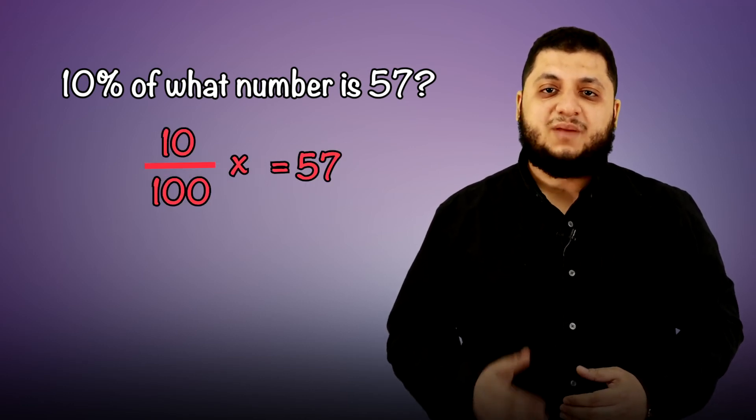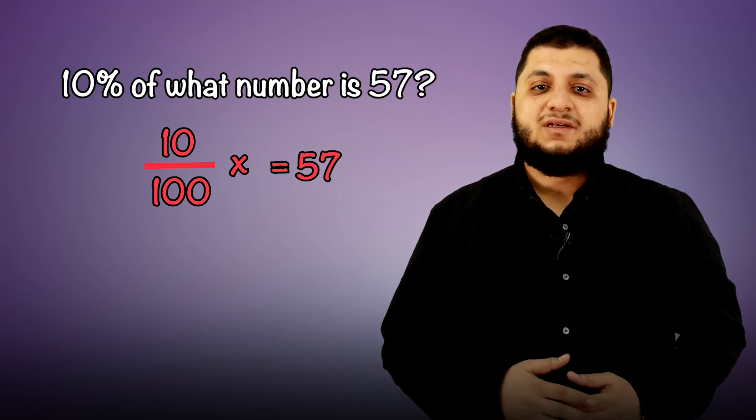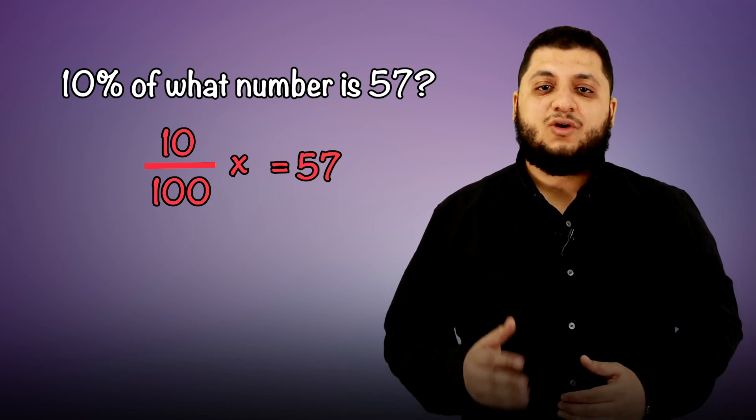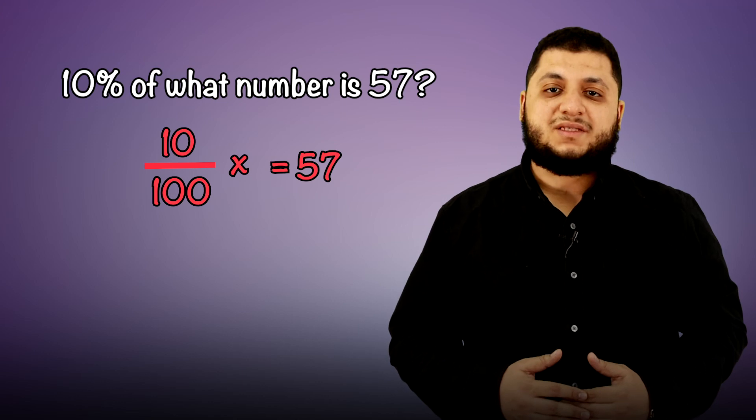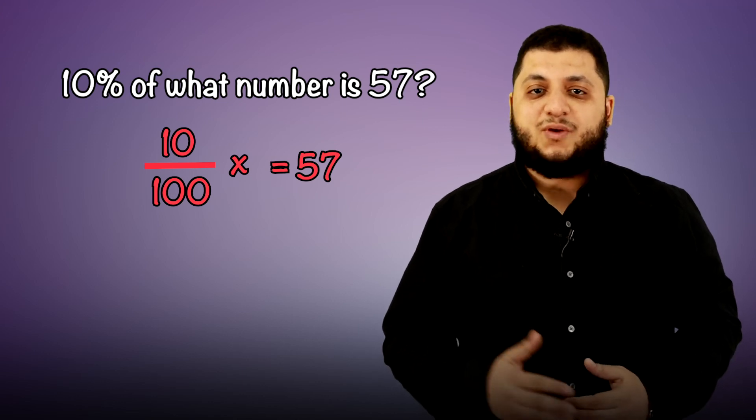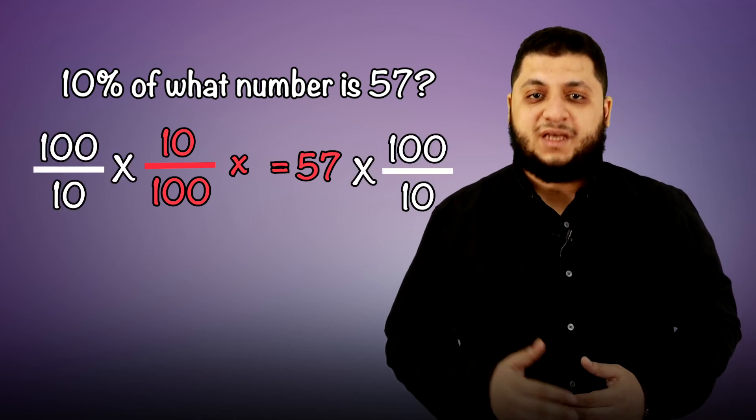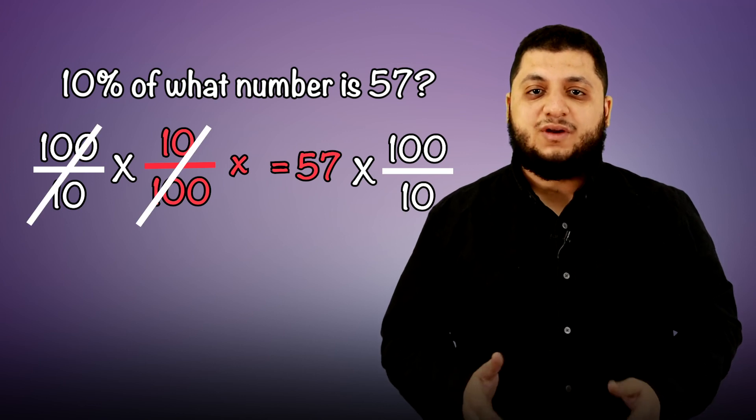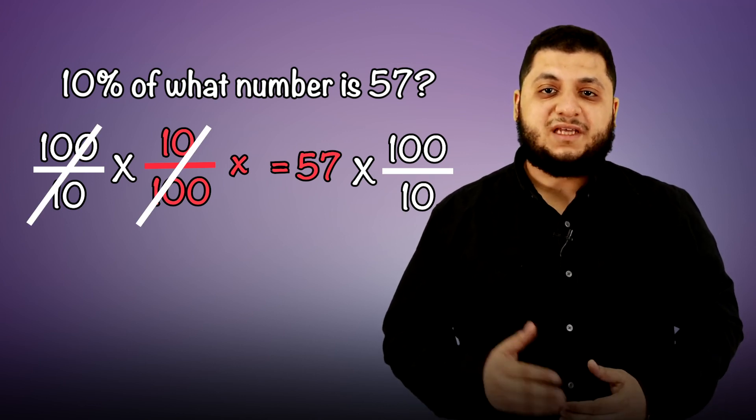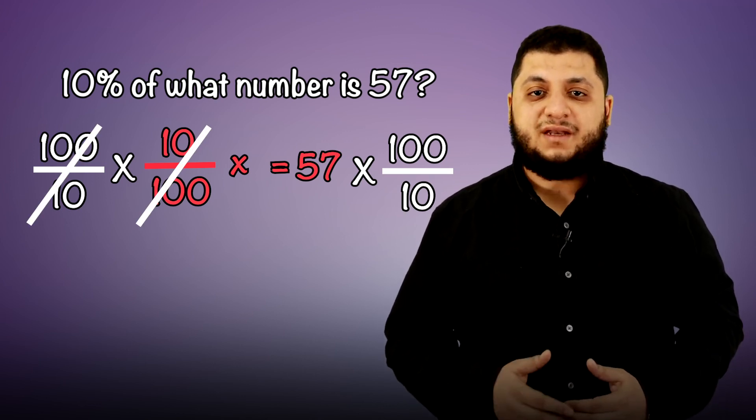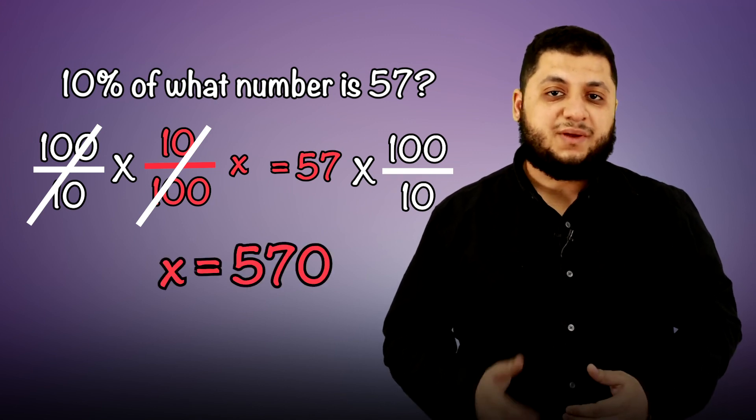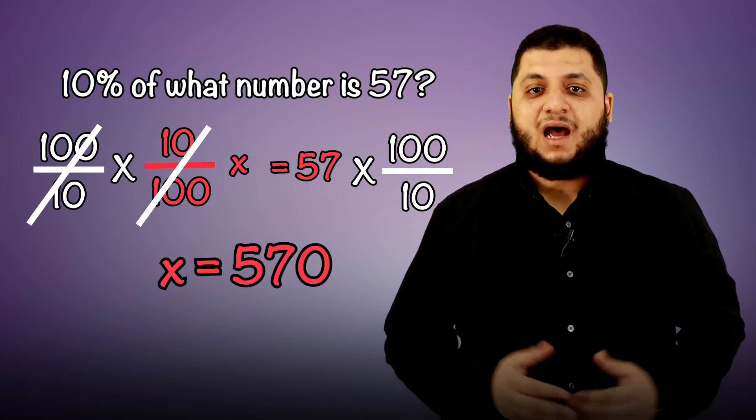10 over 100 times x equals 57. We have to divide by 10 over 100, or multiply by its reciprocal. So multiply both sides by 100 over 10. Now we have x alone, so x equals 57 times 100 over 10, which equals 570. So the number is 570.